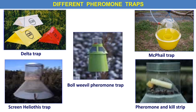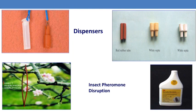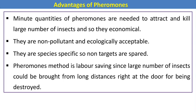Different pheromone traps are available in the market against different pests. With the help of lures and traps, we can monitor or trap insect pest populations. Dispensers — that is, the lures available in the market — can be fixed in pheromone traps to attract male insects. That is the female sex pheromone lure. Advantages of pheromones: minor quantities are needed to attract and kill large numbers of insects, making them economical. They are non-polluting and ecologically acceptable, and species-specific so non-targets are spared. The pheromone method is labor-saving since insects can be attracted from long distances.